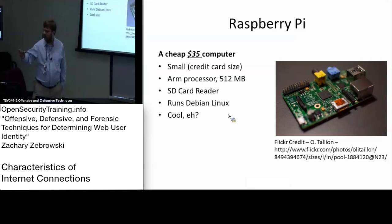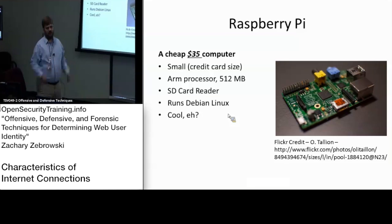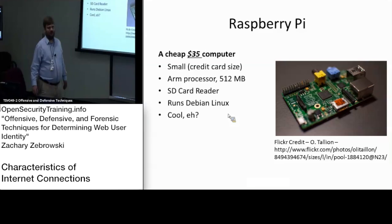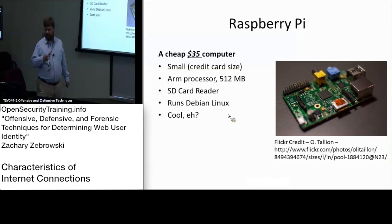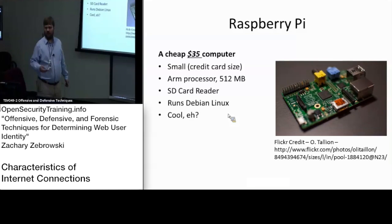It has one gig of memory and it's a very powerful device. It runs Debian Linux, which means you have a full computer to do whatever you need on something that's tiny. It has two USB ports, an Ethernet port, it's powered by a micro USB cable, and it has RGA video and microphone out. You can have a very small footprint to be connected to the internet. The OS runs on the SD card, which is a bit slow, but that's just how they decided to do it.